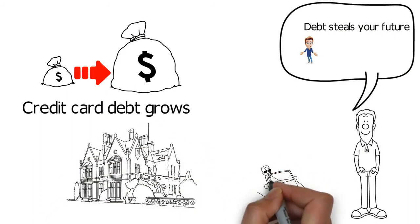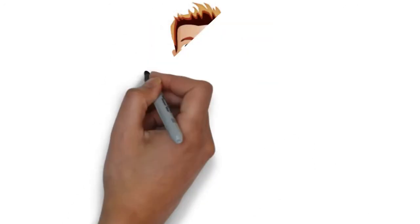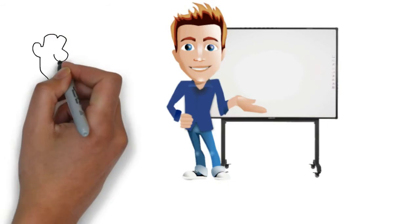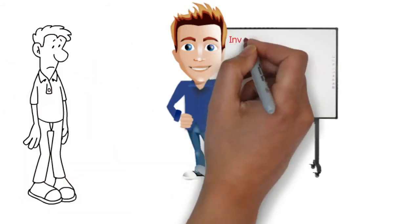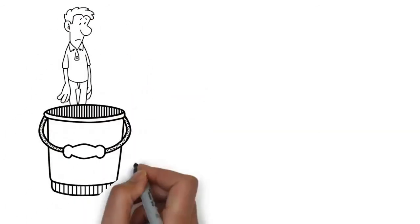Sam and Dave put together an inventory of Sam's debts. It was important to know what they were dealing with. They included his credit card debt at 18%, an overdraft at 12%, and a personal loan at 8%.